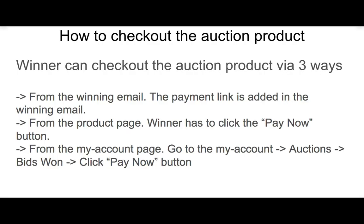The winner can check out the auction product via three ways. First is from the winning email — the payment link is added in the winning email and the winner has to click on it to check out. Second is from the product page — when the auction expires, the 'Pay Now' button is displayed to the winner. Third is from the My Account page.